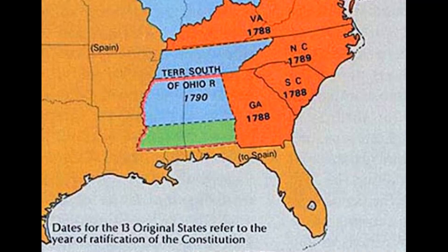One more foreign policy issue resolved under the Washington administration was the border between the US and Spanish colonial positions — that is, the border between Florida and Georgia — which was defined by the Pinckney Treaty of 1795.